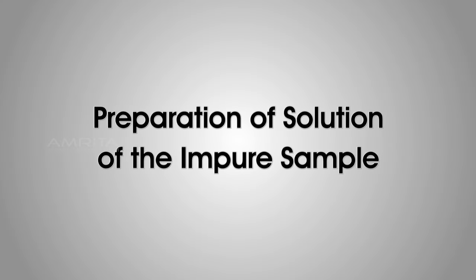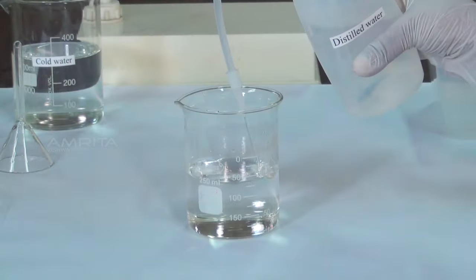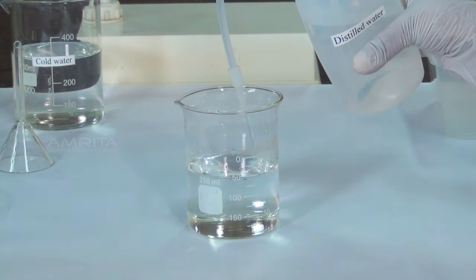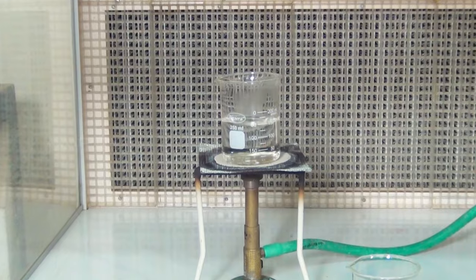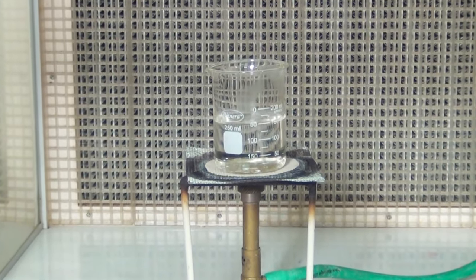Procedure. Preparation of solution of the impure sample. Take about 150ml of distilled water in a beaker. Boil the water in the beaker over the Bunsen burner.